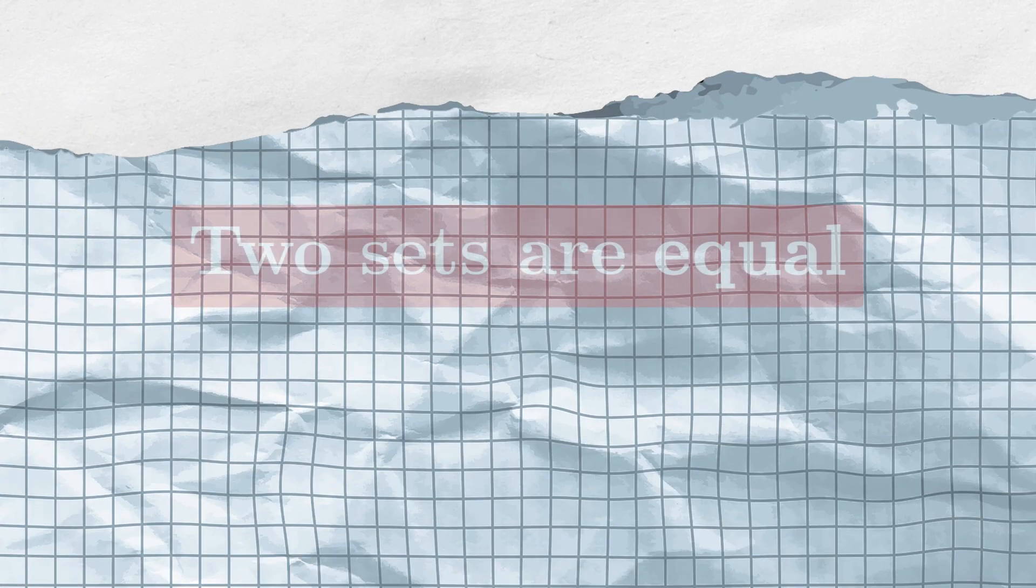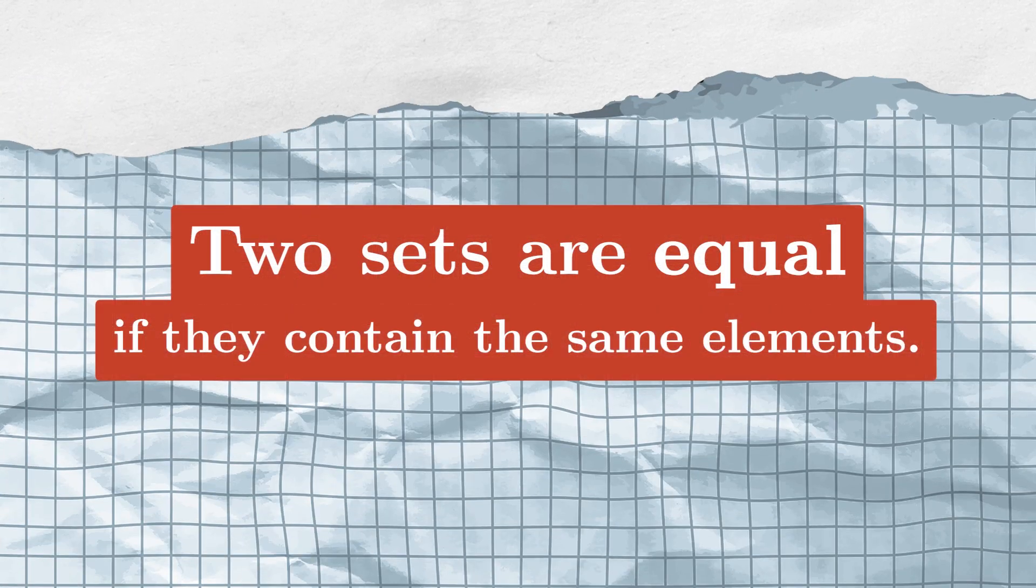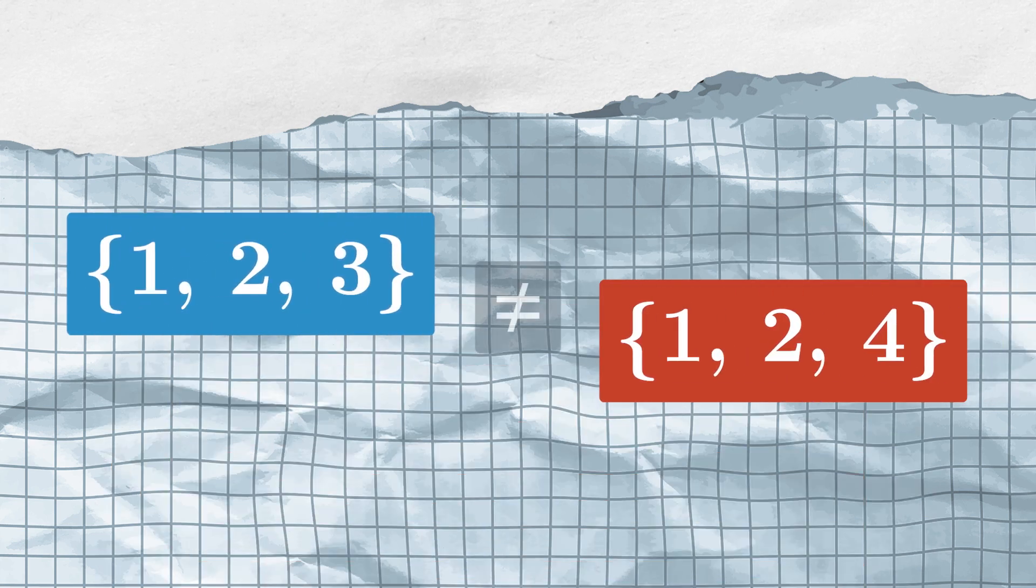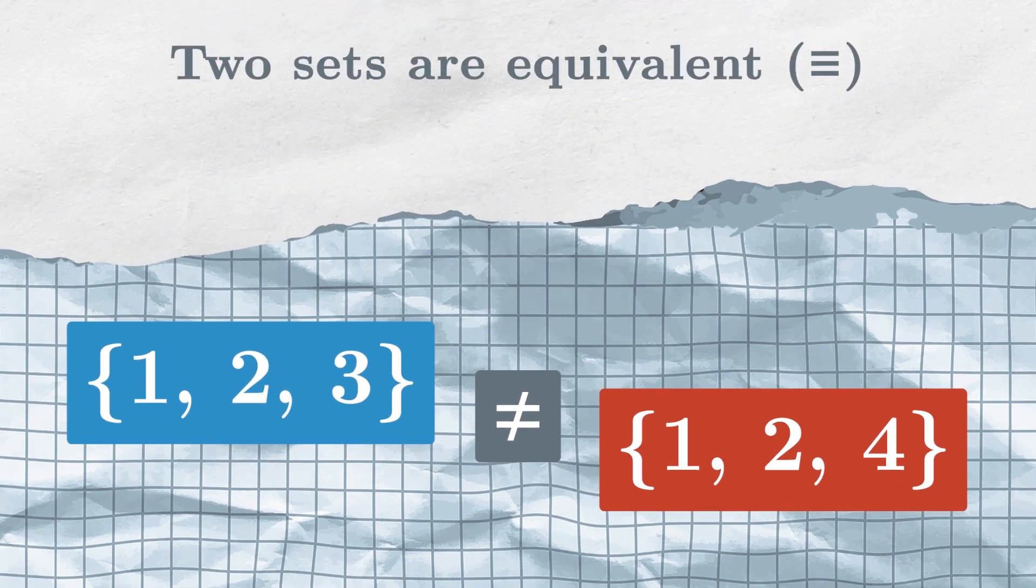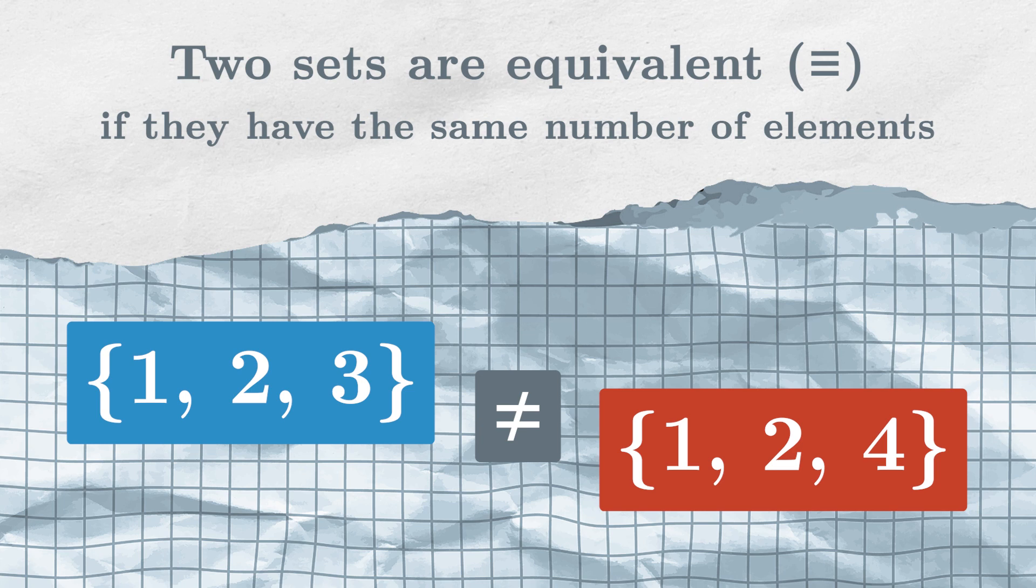The same goes for sets. In the normal sense, two sets are equal if they contain the same elements. For example, these two sets are not equal, because the first one contains 3 and the second one contains 4. But it is also usual to say that two sets are equal, or more formally, equivalent, if they have the same number of elements. In this way of thinking, these two sets are indeed equivalent, because they both have exactly 3 elements.